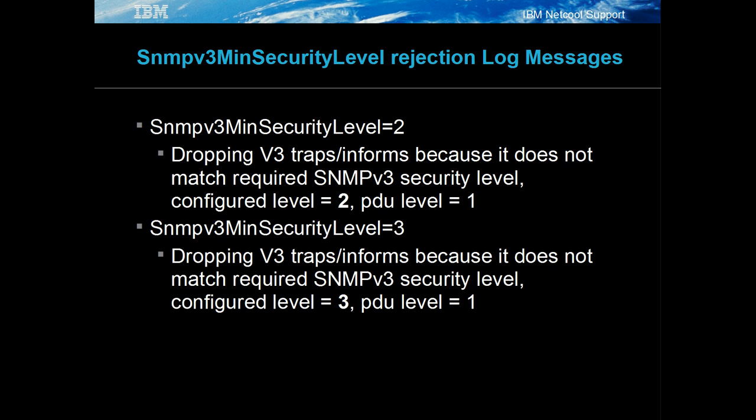When traps are dropped because of the SNMP v3 min security level property, the SNMP v3 security level message is logged at message level debug.